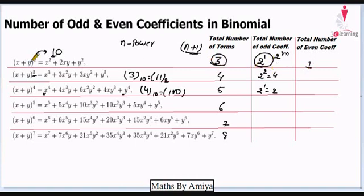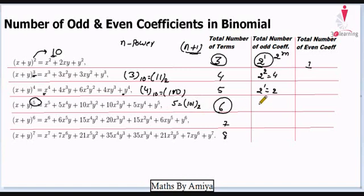For power 5, the total number of terms is 6 (n+1). The binary notation of 5 is 101. So the total number of odd coefficients is 2 raised to power 2, where 2 is the number of 1's, which gives 4.